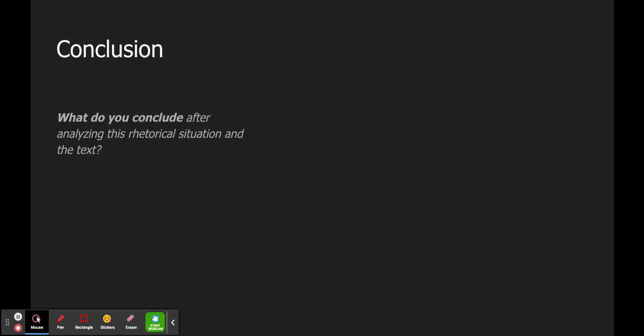And then what do I conclude after analyzing the rhetorical situation? I want to offer an original conclusion. It's tempting sometimes to just summarize everything I've already said, but my reader doesn't want to read a summary of what I just wrote. They just read what I just wrote. So I want to offer a summary judgment of the moment. Again, I'm focusing on the context, right?